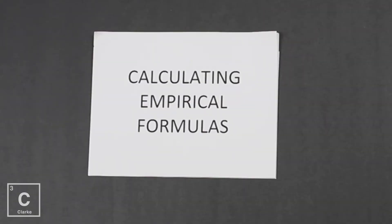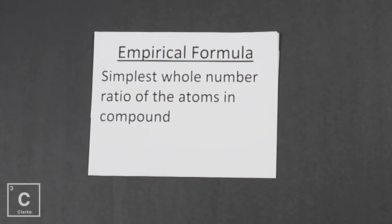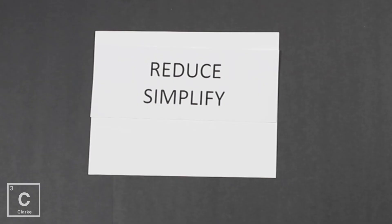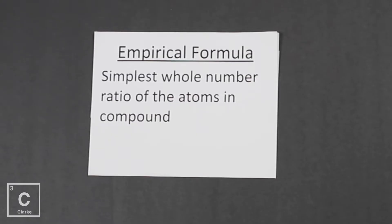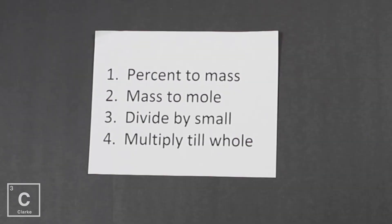We're going to need to use mole conversions to calculate the empirical formula. So if you don't know how to calculate moles from grams, let's start there. An empirical formula is the simplest whole number ratio of the atoms in a compound. I call it the reduced down version, or the simplified version — it's the basic ratio of the elements in a compound.